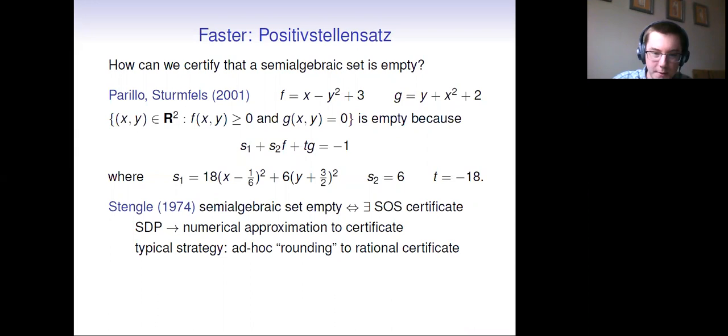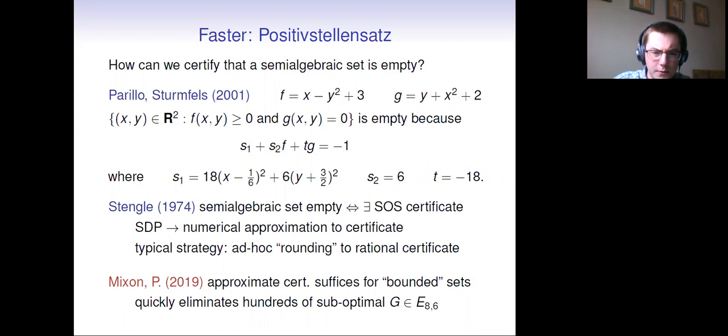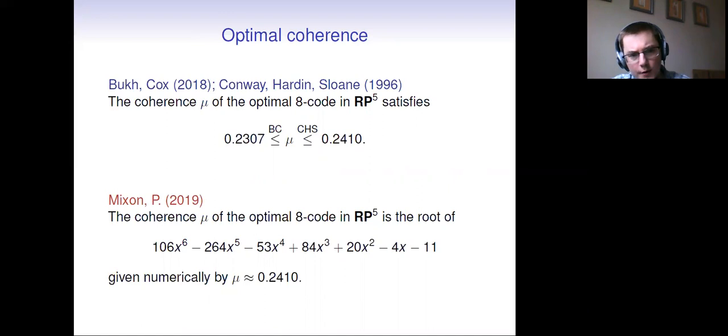And the Stengle's positive Stellensatz is roughly the statement that there's a sum of squares certificate that shows that that particular set is non-empty if and only if that semi-algebraic set is empty, you can produce one of these certificates. And with semi-definite programming, you can build yourself a numerical approximation to the certificate. I'll bet you anything that when they had that one-sixth up there in the S1, they didn't see a one-sixth from their computer at first. They saw a decimal expansion that they recognized as one-sixth after staring at it for a while. And I think one of the most exciting things that Dustin and I worked out in here was really that we have this idea of an approximate certificate suffices for what I'm going to call bounded sets. And this allows us to just quickly rule out all sorts of gram matrices that we couldn't touch with CAD.